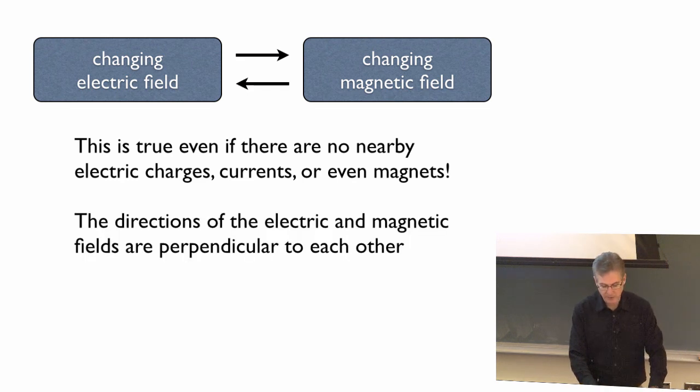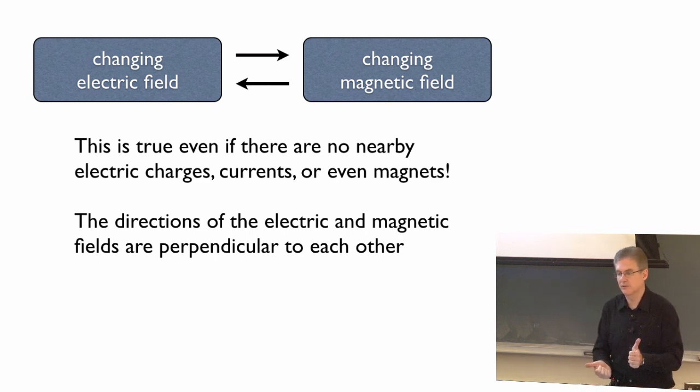Now, and also as I said, the directions of the electric and magnetic fields are perpendicular to each other. This was a consequence of the original equations written down by Maxwell back in 1856 to describe the interrelationship, the interplay between electric and magnetic fields and forces and currents.